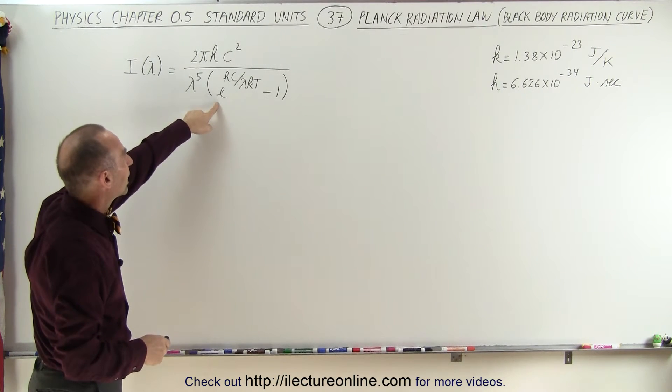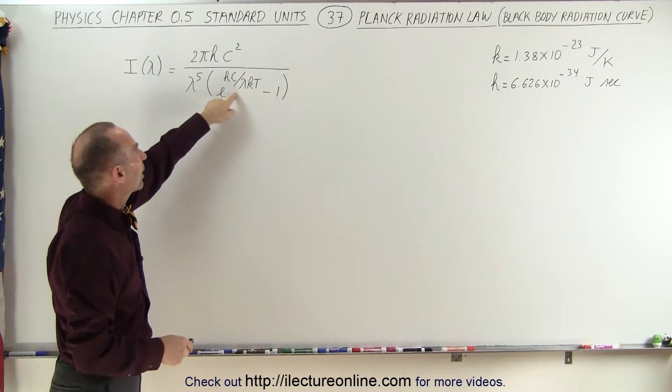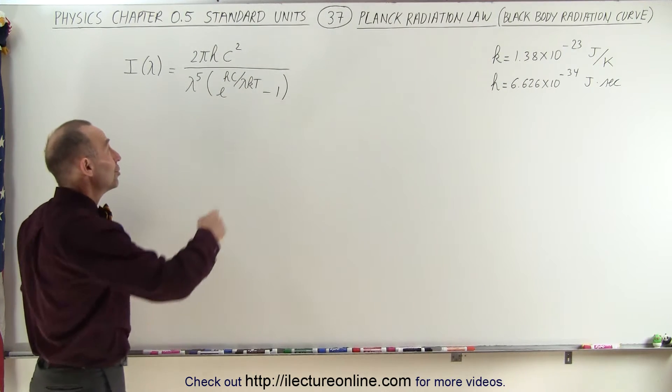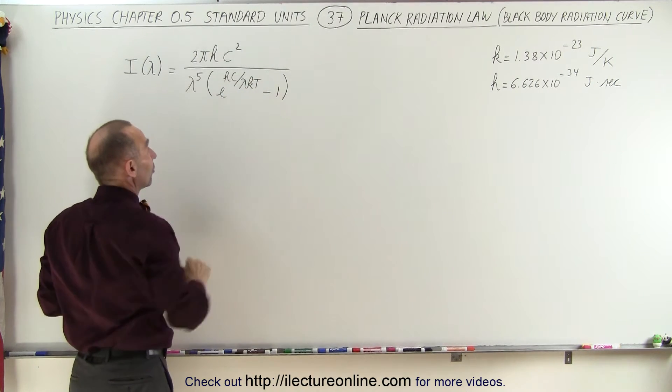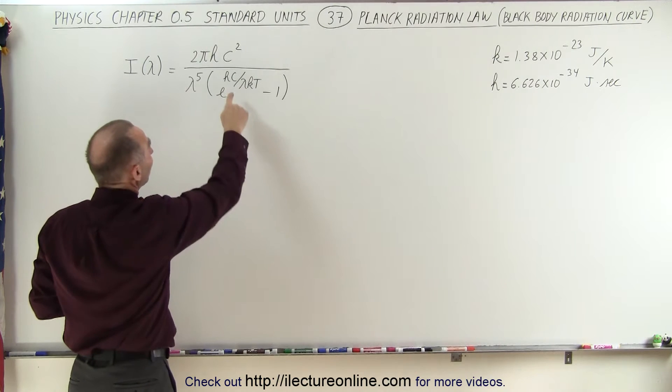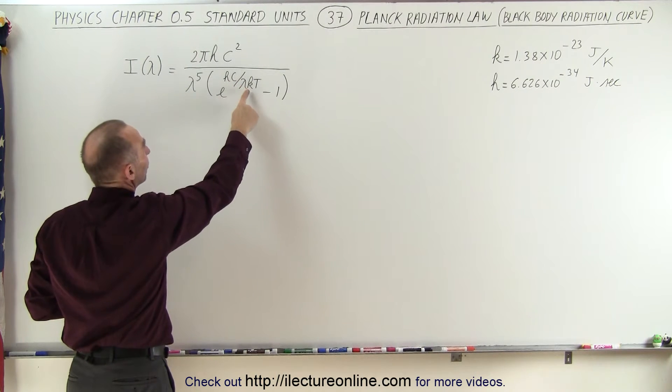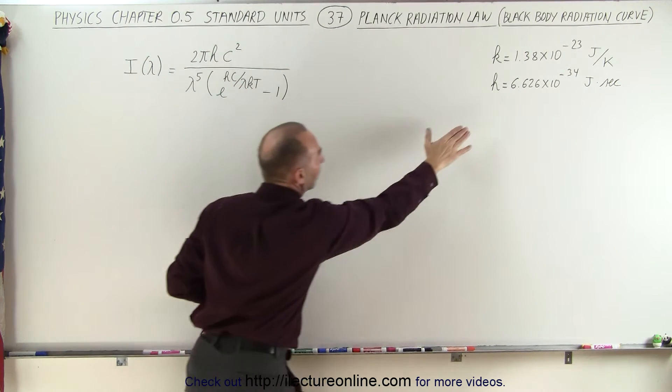Let's start with the denominator here. We have an exponent, e to the exponent minus 1. So, the units of this better be unitless. Well, let's find out if it is. We have the Planck's constant in there, we have the Boltzmann constant in there, which are defined over here.